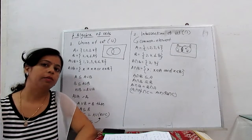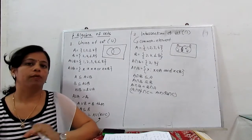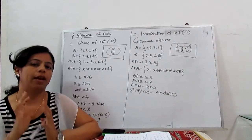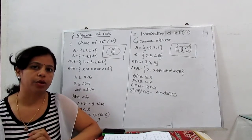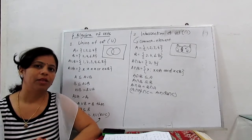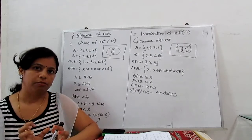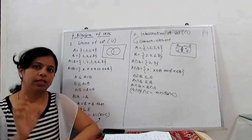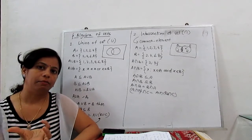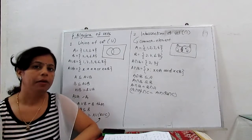Now we discuss a bit more about the set. We learned what is a set — a well-defined collection of data. Then, what is a subset? Subset means if we have one universal set and from that universal set, we take some elements and make a new set, that is called a subset of that main set.